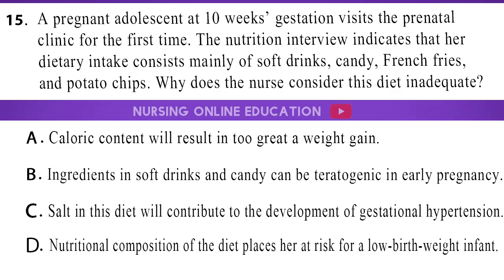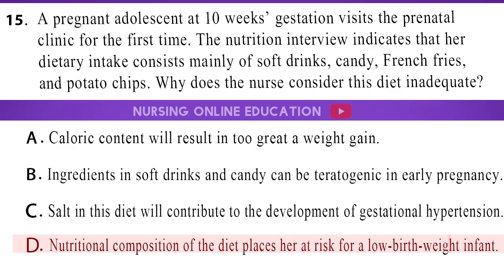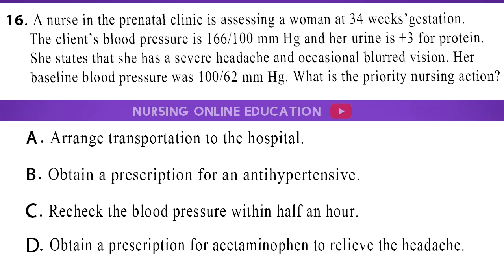Question 15. A pregnant adolescent at 10 weeks gestation visits the prenatal clinic for the first time. The nutrition interview indicates that her dietary intake consists mainly of soft drinks, candy, french fries, and potato chips. Why does the nurse consider this diet inadequate? A. Caloric content will result in too great a weight gain. B. Ingredients in soft drinks and candy can be teratogenic in early pregnancy. C. Salt in this diet will contribute to the development of gestational hypertension. D. Nutritional composition of the diet places her at risk for a low birth weight infant. The answer is option D: Nutritional composition of the diet places her at risk for a low birth weight infant.